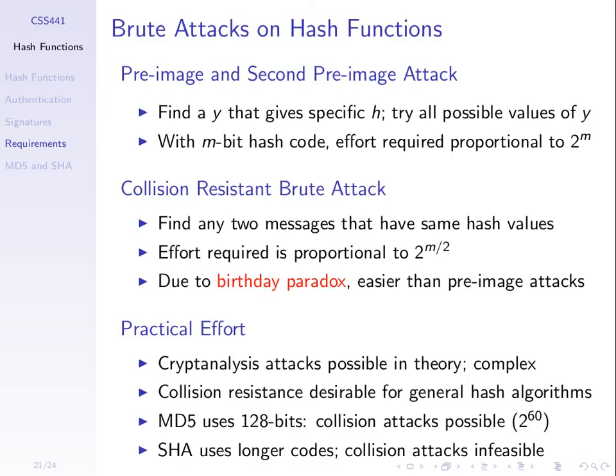To understand why the strong collision resistant property is easier for the attacker to defeat, you can study the birthday paradox. It asks: what's the probability that someone in this room has the same birthday and month as me, versus what's the probability that any two people in the room have the same birthday? The second has a much higher probability — finding any two matching birthdays is much more likely than someone matching mine specifically. This is the same concept, referred to as the birthday paradox.